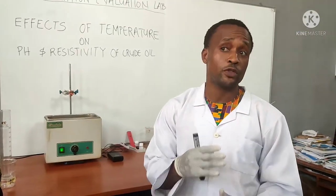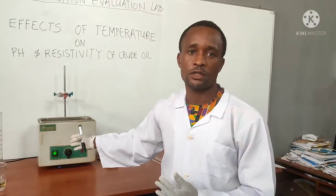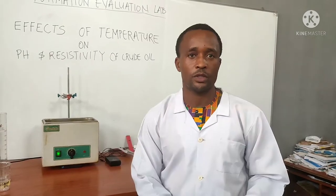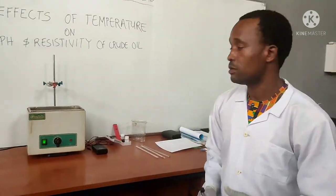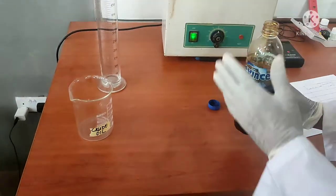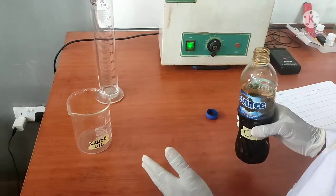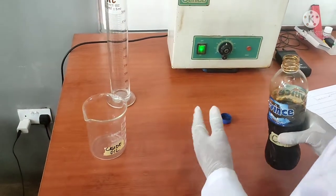Let's look at the procedure for carrying out these experiments. The first thing we do is measure 300ml of crude oil into the beaker.